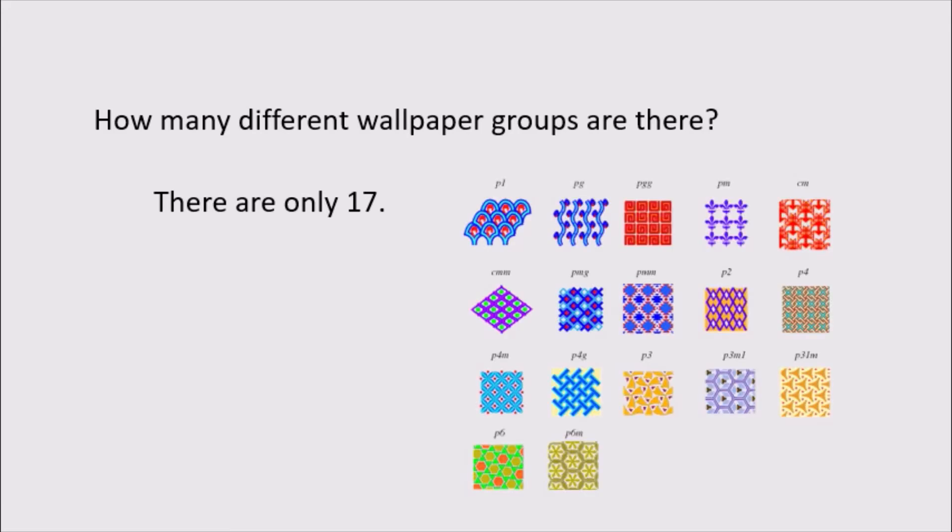At this point, you might be asking, how many different wallpaper groups are there? There seems to be a lot. You've got reflections, rotations, glide reflections, translations, and we haven't even covered half of them. How many are there? Well, it turns out that there's exactly 17 different ones, which is kind of surprising. It's a weird number, and to me, it seems kind of small. In fact, here's a picture for each of the 17 groups showing their symmetries.